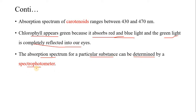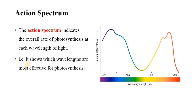The absorption spectrum of a particular substance can be determined by a spectrophotometer, and the process is known as spectrophotometry. To measure the absorption spectrum of a specific pigment, we use a process called spectrophotometry and the machine is called a spectrophotometer. Spectrophotometry will be explained in a separate video.